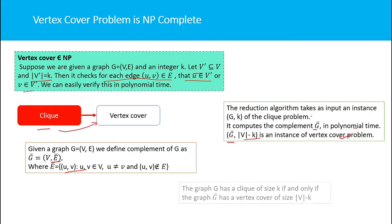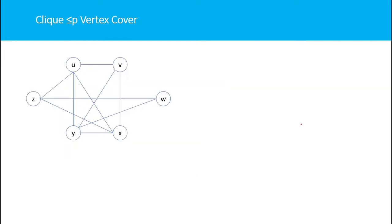The key claim is: graph G has a clique of size K if and only if graph G-bar has a vertex cover of size |V| minus K. Consider this example graph — it has a clique of size 4, where U, V, W, X, Y are all connected. It does not have a clique of size 5 because Z is not connected to V or Y.